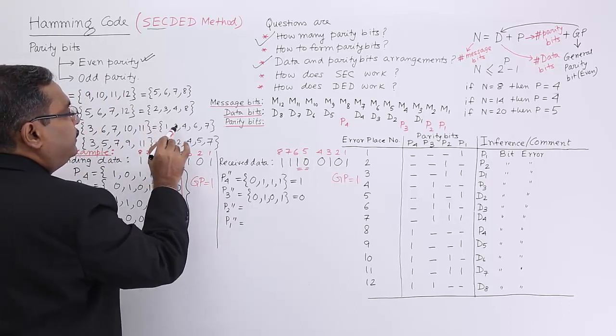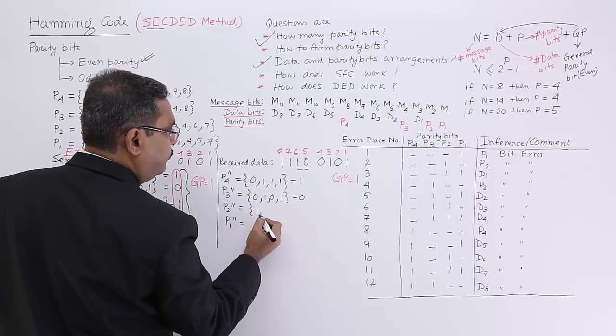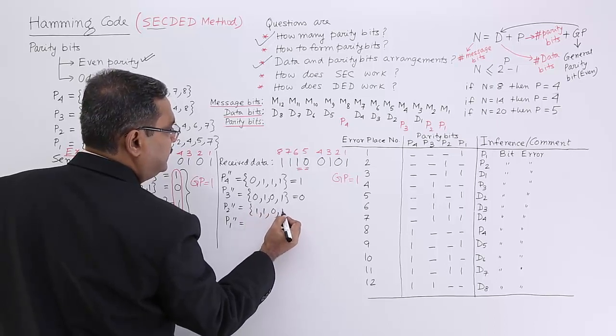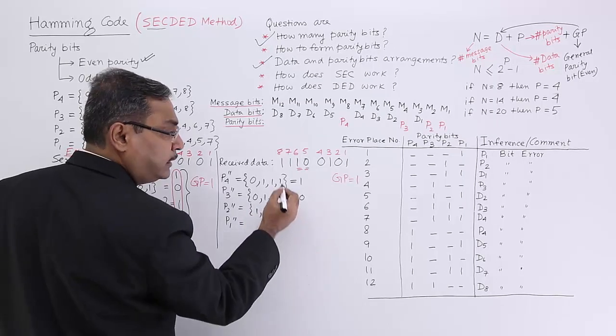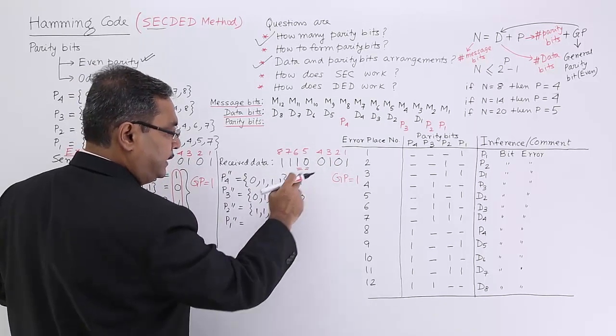P2: 1, 3, 4, 6, 7. So 1, 3, 4, 6, 7. I think you are getting the logic. We did this one earlier. We are writing the respective bits here in the position.